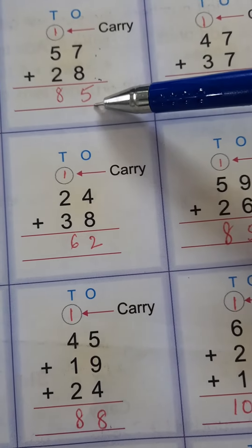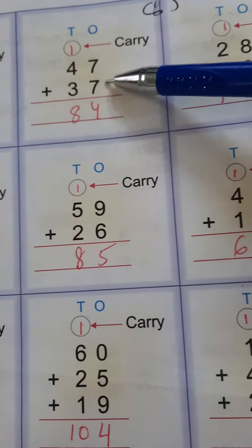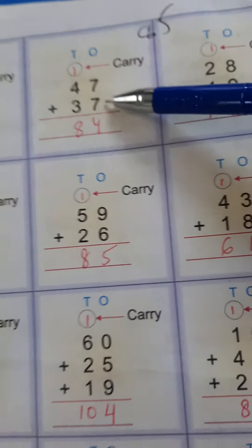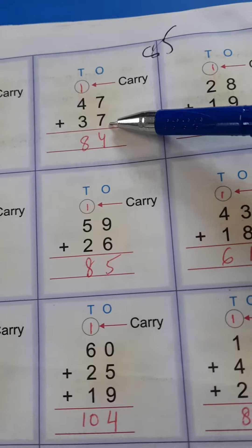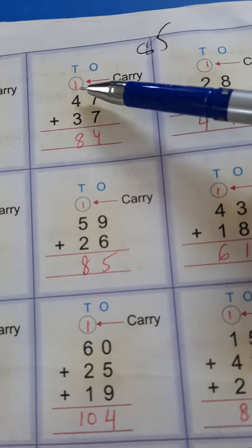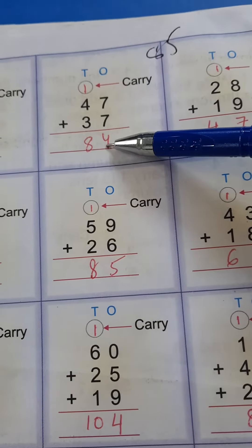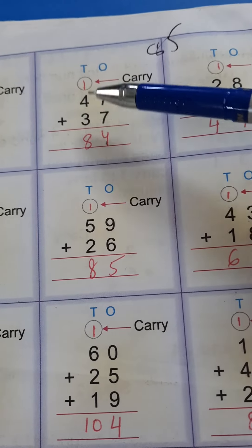In the same way, see the next one: 7 plus 7 equals 14. 1 we are going to carry and 4 we are going to write here. 4 plus 1 equals 5, 5 plus 1... 5 plus 3 equals 8, so 84.